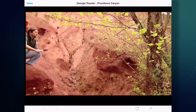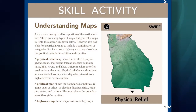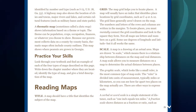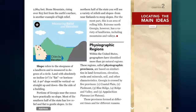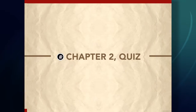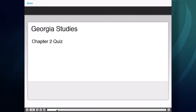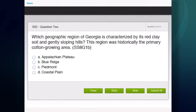Providence Canyon is one of Georgia's seven natural wonders. Not only have the media features been enhanced, but so have the embedded tasks — skill activities, locating the main idea tasks, and chapter quizzes are all rendered in a digital format both familiar and engaging to modern learners.